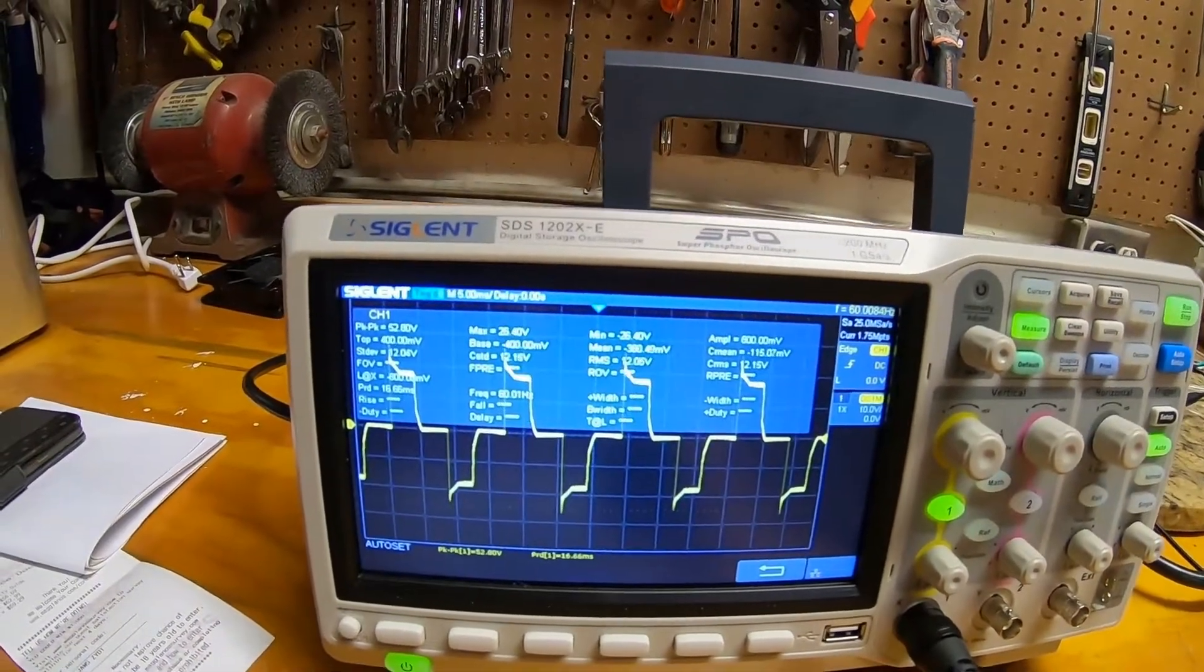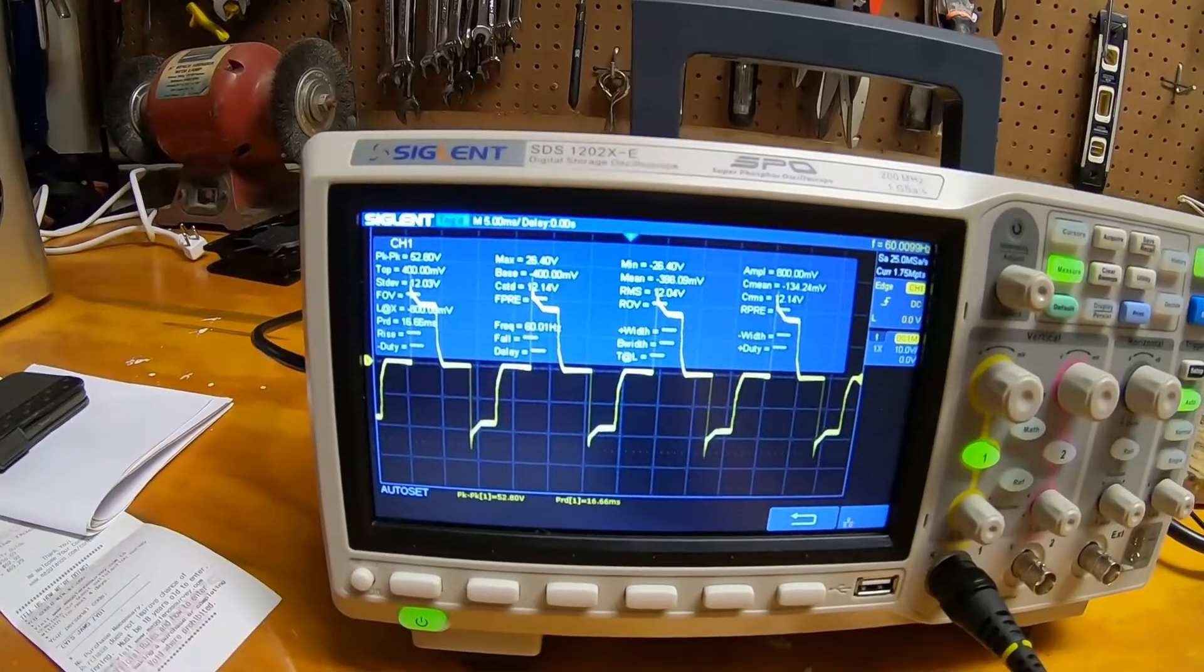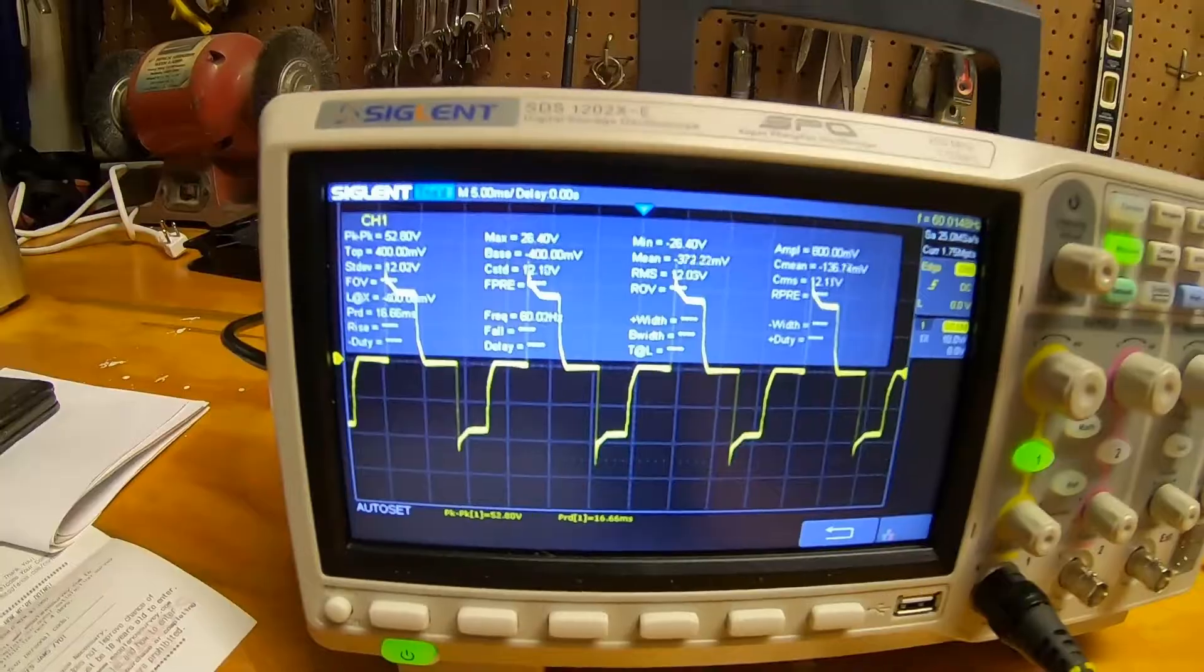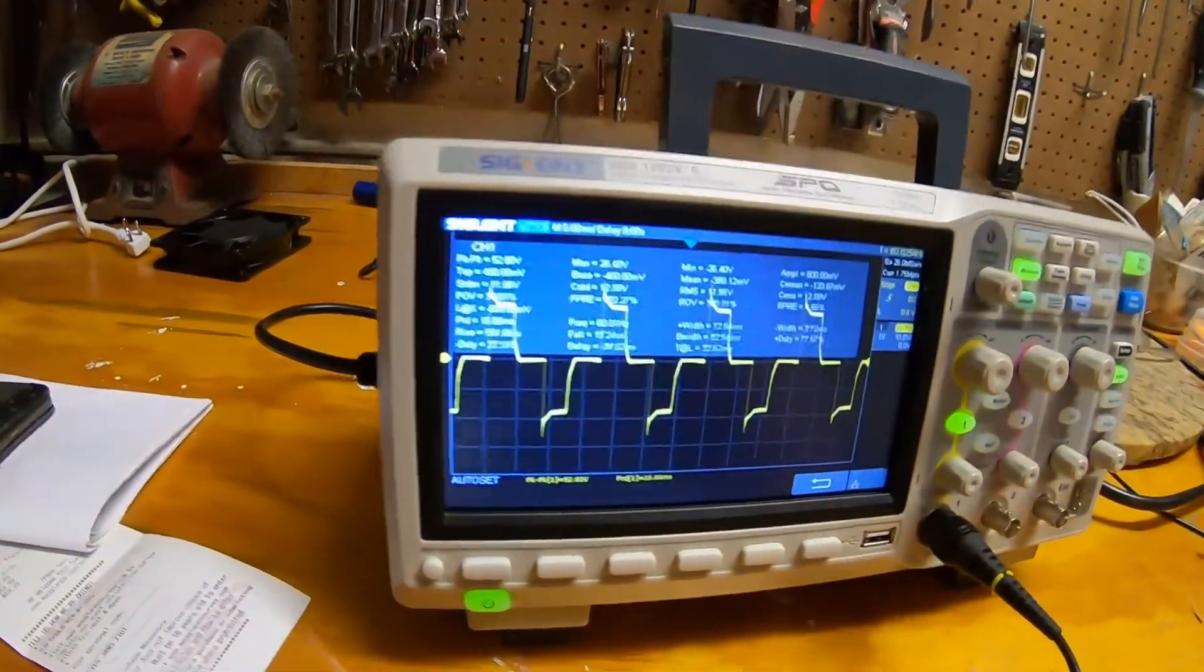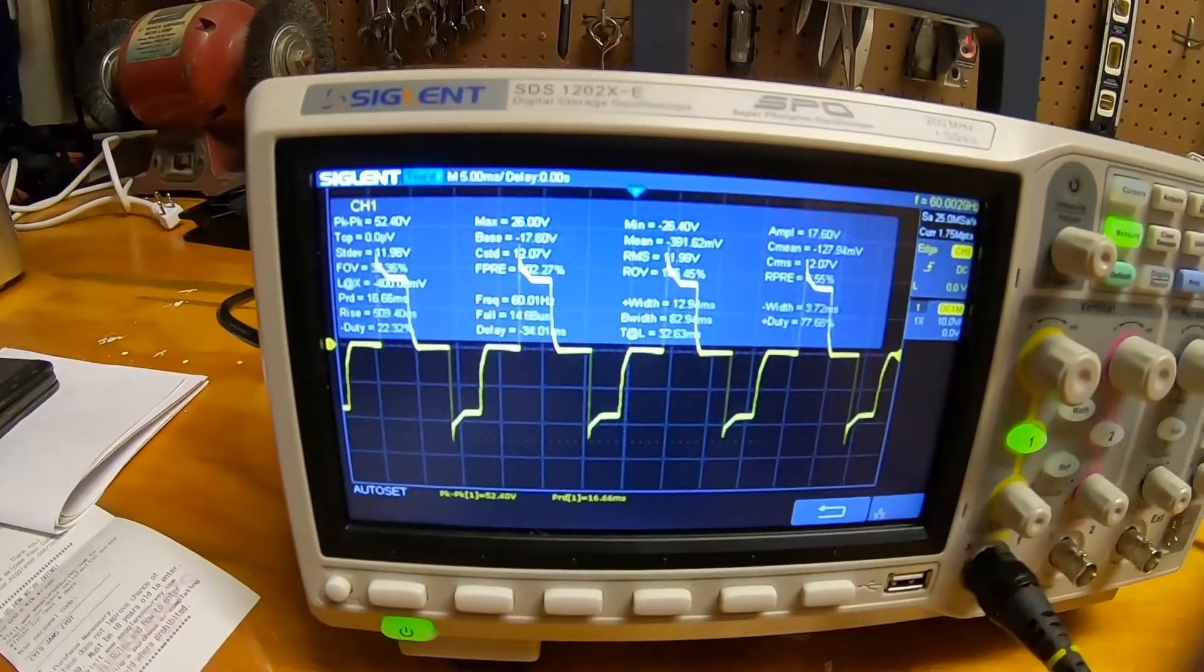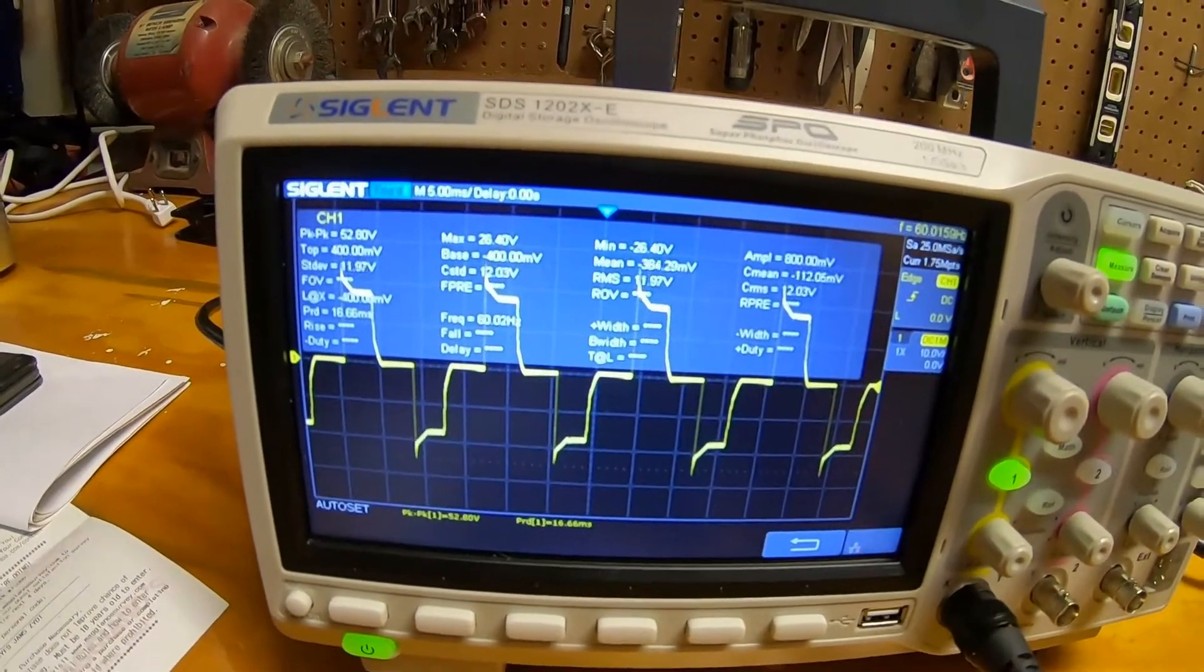You can see the scope is even having trouble zeroing in on it. A lot of these measurements are freaking out a little bit you can see on the display. Again this is also attenuated so you're not going to see 120 volts RMS. This is attenuated 10x but they call this a stepped approximation to a sine wave.